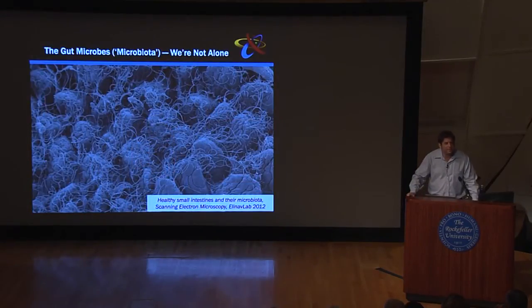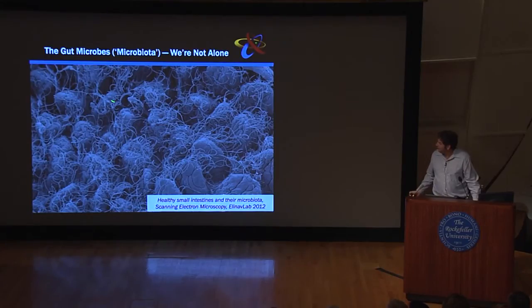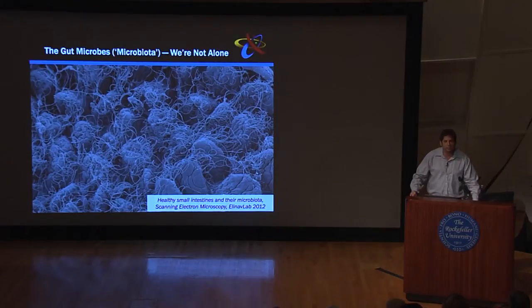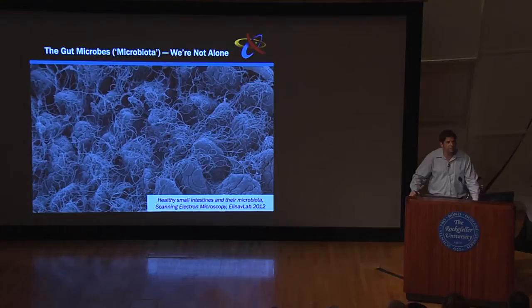They say that one photo is worth a thousand words, so this is the photo — a scanning electron microscopy which actually describes what we all look like from the inside. In a healthy human being you can see those bumps, those hills, which represent our lining epithelium covering our gastrointestinal tract. Above it there is a carpet of what looks like shoelaces — these are the trillions of bacteria that live within each and every one of us. We call them the microbiota.